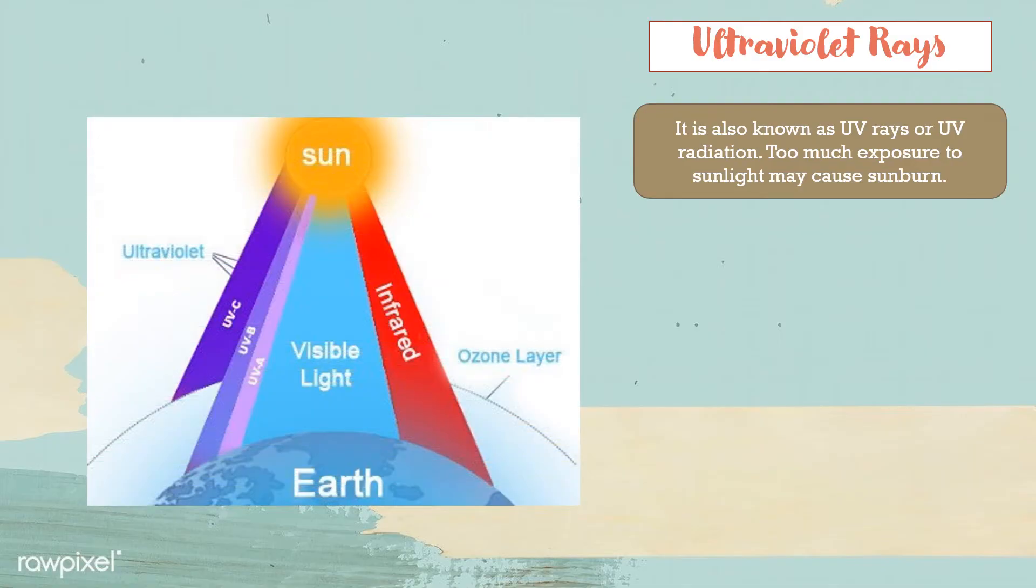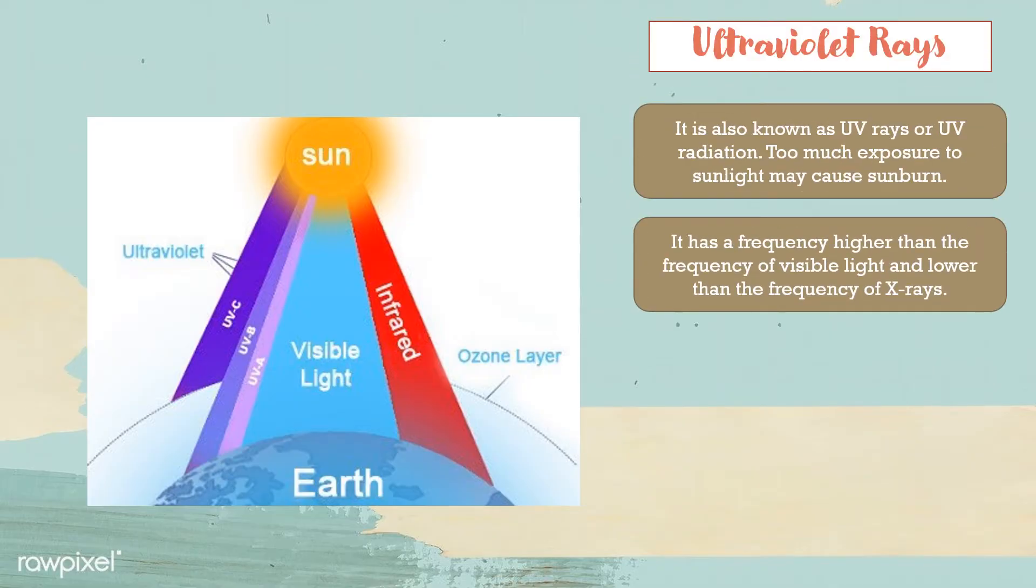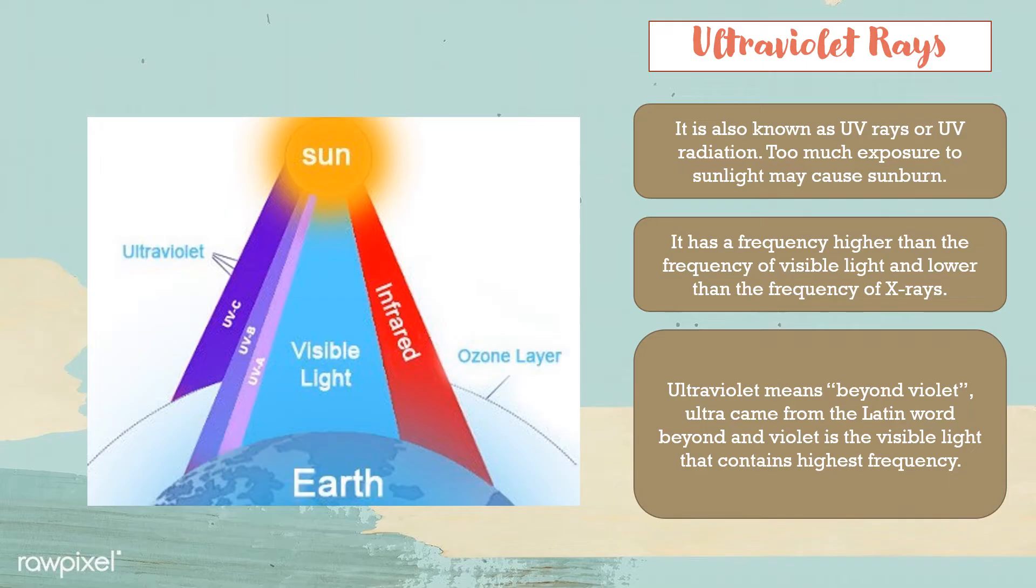Then, the ultraviolet rays. It is also known as UV rays or UV radiation. Too much exposure to sunlight may cause sunburn. It has a frequency higher than the frequency of visible light and lower than the frequency of X-rays. Ultraviolet means beyond violet. Ultra came from the Latin word beyond and violet is the visible light that contains highest frequency and that is the ultraviolet rays.